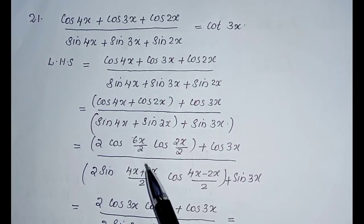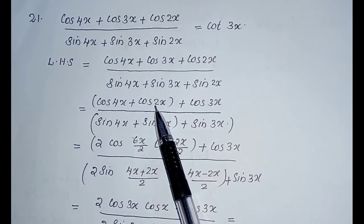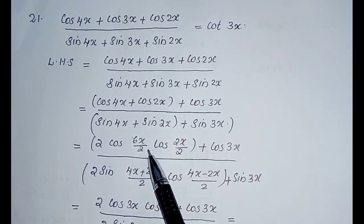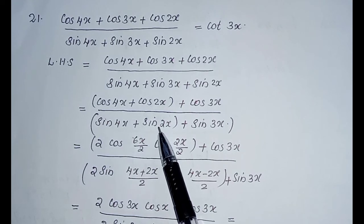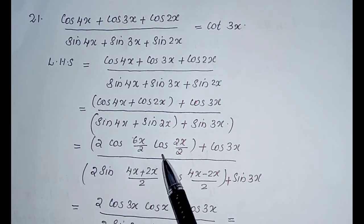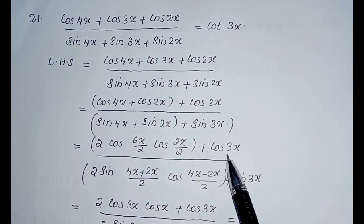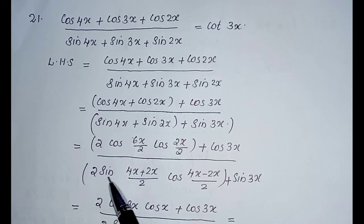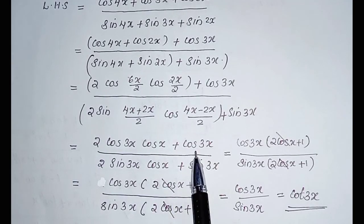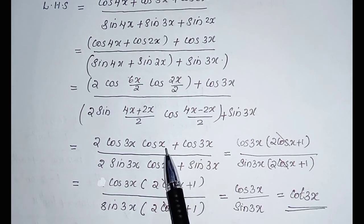Using the identity cos x plus cos y equal to 2 cos((x+y)/2) cos((x-y)/2) and sin x plus sin y equal to 2 sin((x+y)/2) cos((x-y)/2), we can write 2 cos(6x/2) cos(2x/2) plus cos 3x in numerator, and 2 sin((4x+2x)/2) cos((4x-2x)/2) plus sin 3x in denominator. That simplifies to 2 cos 3x cos x plus cos 3x, and 2 sin 3x cos x plus sin 3x. Cos 3x is common in the numerator and sin 3x is common in the denominator.